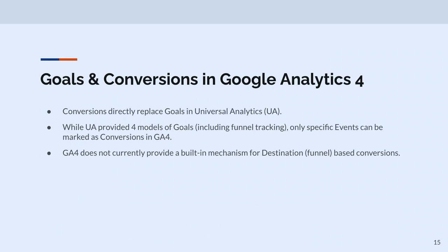Goals and conversions are different. Universal Analytics had four types of goals: a pages-per-session goal, a time-per-session goal, an event goal, and a funnel goal — get to this page by going through these previous pages. GA4 has one type of conversion: this event is a conversion. There's none of that other stuff, no funnels. You can kind of, using audiences and segments, retrofit some of the older style goals, but it's a little hacky.